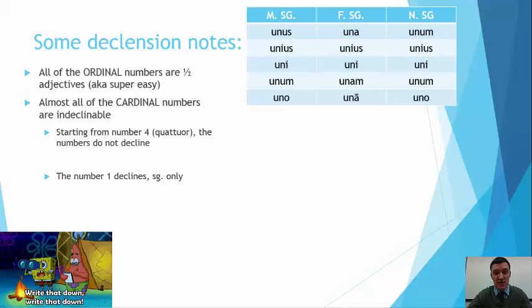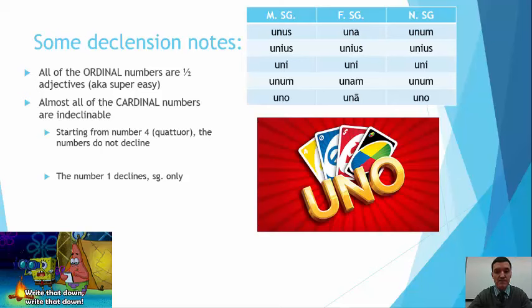So here you see the number 1 decline. Unus, una, unum. It follows the same declension as the demonstratives, where you have an ius in the genitive, and you have an i in the dative. In my life, I've always called that the pronoun declension. An ius in the genitive and an i in the dative. Other than that, it looks like a pretty standard first/second with no plural. So unus, una, unum. Unius, unius, unius. Uni, uni, uni. Unum, unam, unum. Uno, una, uno. Like the card game.